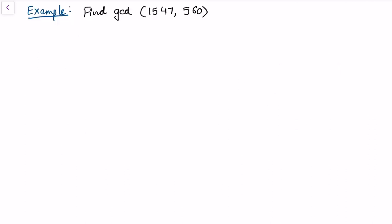Let's take an example. I want to find the GCD of 1547 and 560. Since 1547 is the larger number, we divide it by 560. This gives 1547 = 2×560 + 427. Since the remainder 427 is not zero, we carry on the operation.